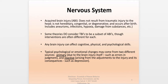Any brain injury of any type will affect cognitive, physical, and psychological skills. Typical psychological or emotional changes come in two ways: primary changes, which are due to the injury itself — such as errors in judgment from damage to the logic center — and reactive changes, which arise from adjustment to the injury and its consequences, such as depression as the individual learns to cope with the changes in how he or she relates to the world.